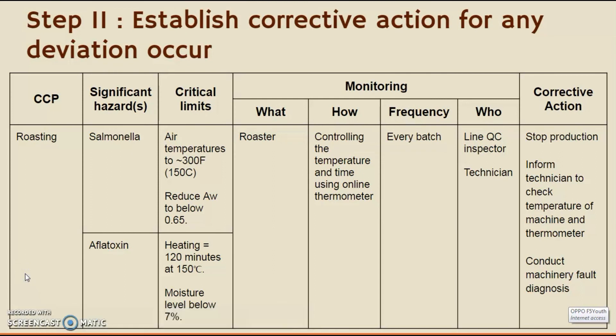Our third critical control point is roasting, and the significant hazards involved are salmonella and aflatoxin. There are critical limits that should be achieved and not exceeded so that our product is safe to consume. The corrective actions if things go wrong: stop production immediately and inform the technician to check the temperature of the machine and thermometer, and conduct machinery fault diagnosis. If heating is not achieved for 120 minutes at 150 degrees Celsius, it could pose a risk of aflatoxin and therefore could be fatal to our customers.